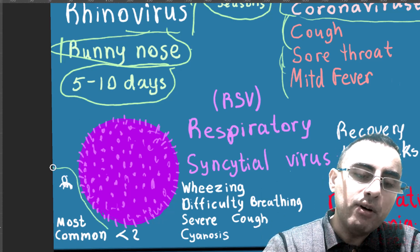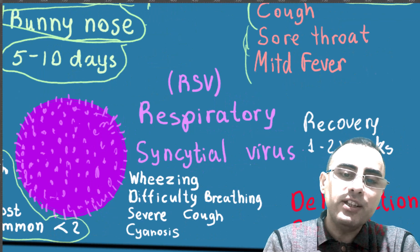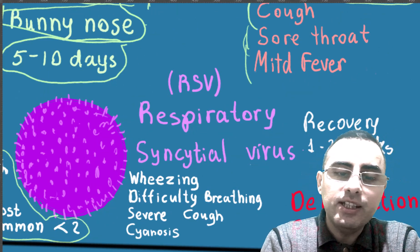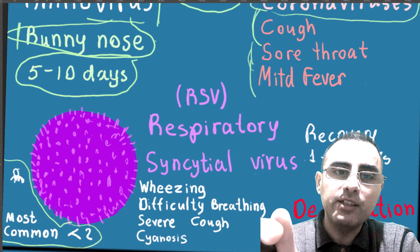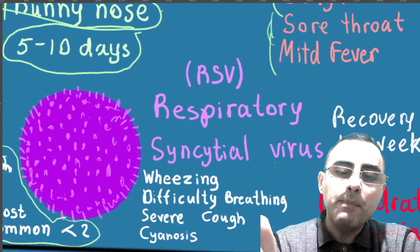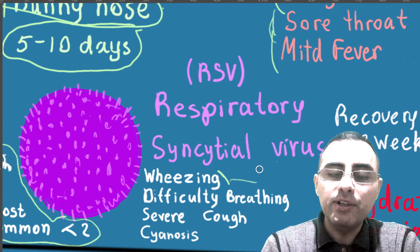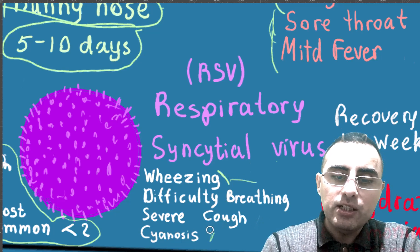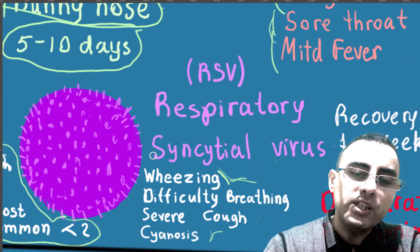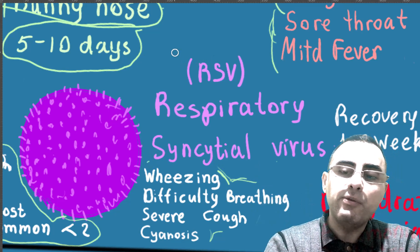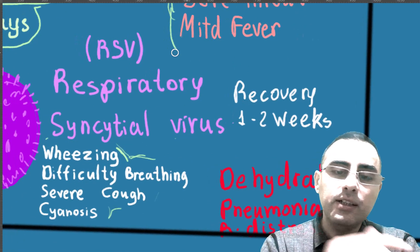The third most common virus is respiratory syncytial virus (RSV). This virus is interesting because it is very common among newborns and young kids under two years of age. RSV also causes symptoms like runny nose and cough, but what is typical for this virus is wheezing, sometimes difficulty breathing, severe cough, and cyanosis.